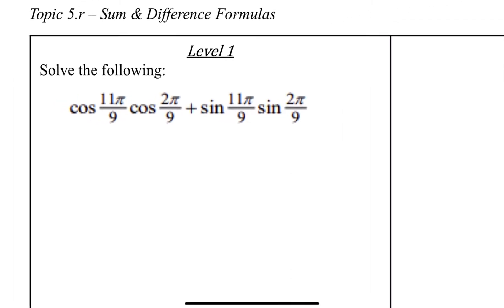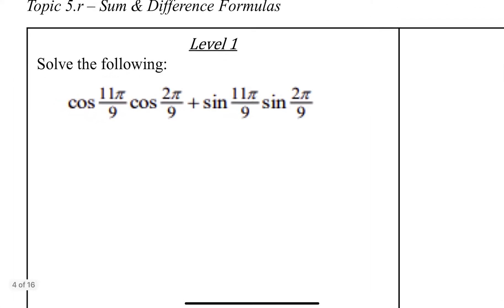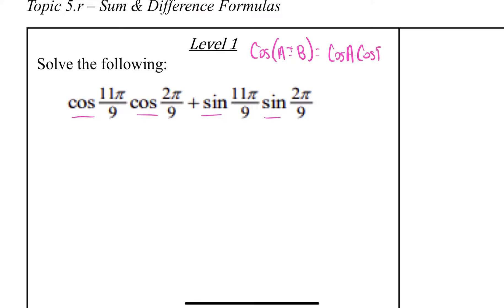In this first problem, they asked us to solve it by working backwards. Immediately what I recognize is we've got cosine cosine sine sine. That immediately tells me it's going to be a cosine sum and difference formula, because that's how our cosine formulas were set up. The cosine of A plus or minus B equals cosine A times cosine B, and then the opposite sign — minus plus — sine A sine B.